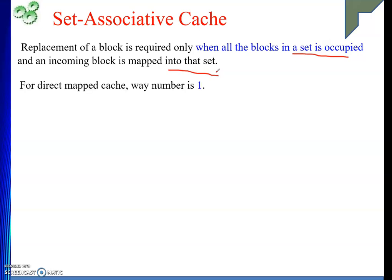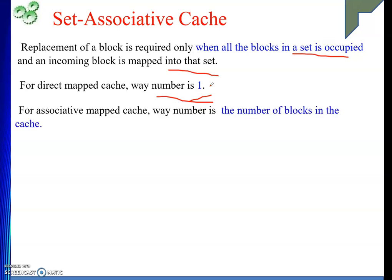For direct map cache, what will be the way number? It will be one. Our specific position is fixed, so in case of direct mapping the way number will be one. That means the number of sets equals the number of blocks in the cache memory, and one set consists of one block. In case of fully associative cache, the way number will be nothing but the total number of blocks present in the cache memory.